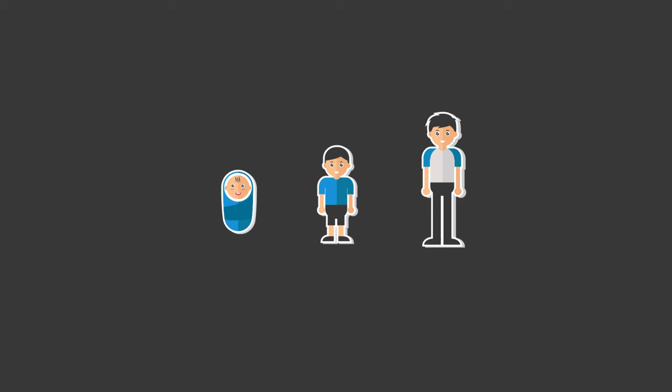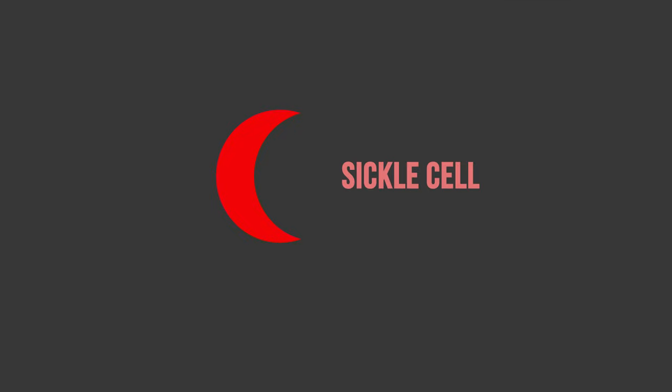Individuals with sickle cell disease are at risk of a whole host of medical problems, such as heart attack and stroke. As recently as the 1970s, sickle cell sufferers did not live much beyond the age of 14, usually before they had a chance to reproduce and pass their defective genes to the next generation.